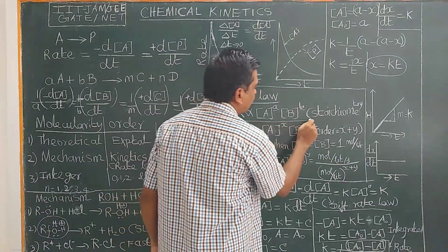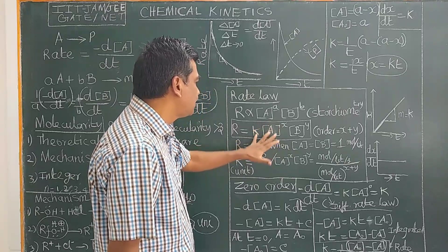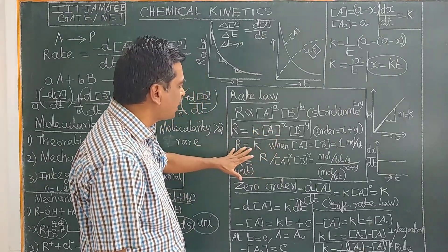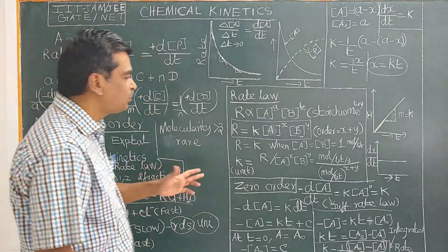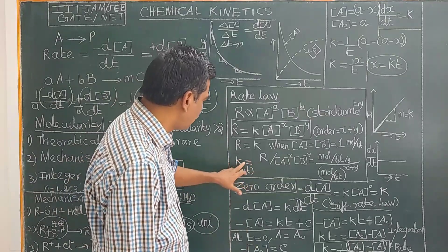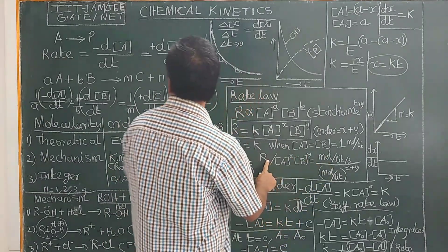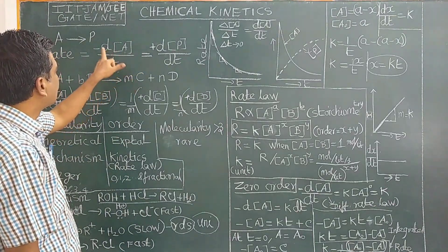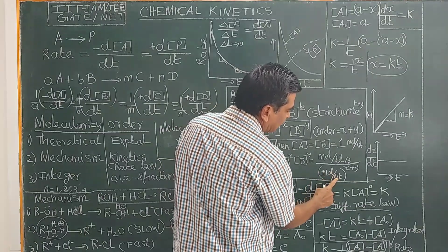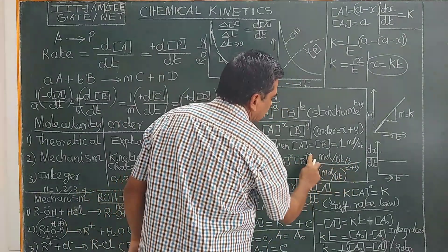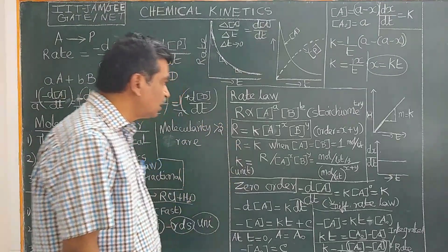This is the rate law expression — a very important expression. K is the rate constant. The rate constant is equal to the rate of reaction when the concentrations of the reactants A and B are unity (1 mol/L), at which point the rate becomes K. The unit of K is derived as: K = rate / ([A]^x [B]^y), where rate has units of mol/L/s, and concentration has units of mol/L. Therefore, the unit of K for an nth-order reaction is mol^(1−n) · L^(n−1) · s^−1. It is often asked to write the unit for a specific order reaction.